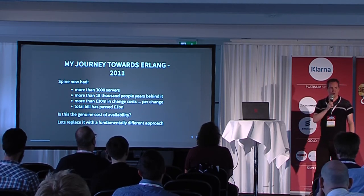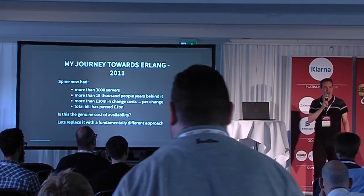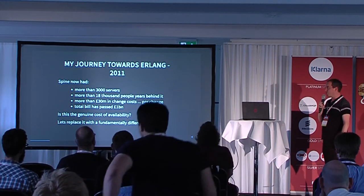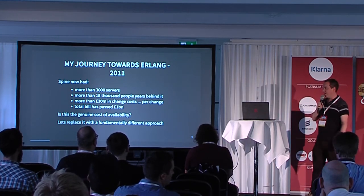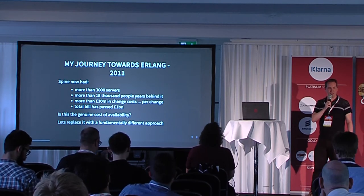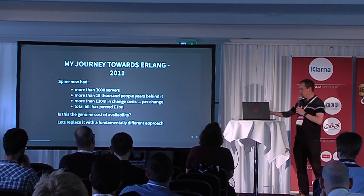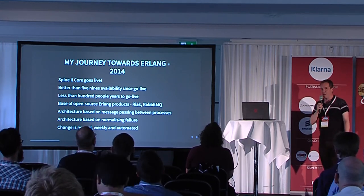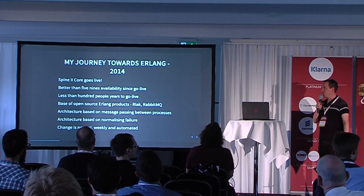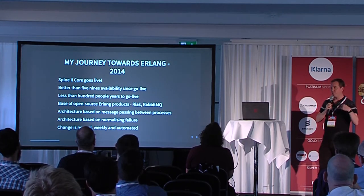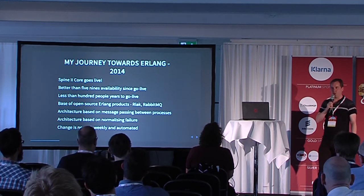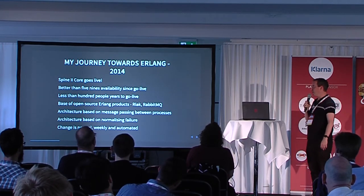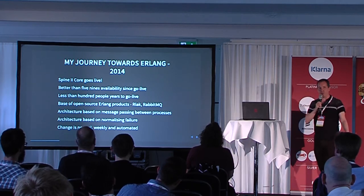The question going around the health service at the time was: is this the cost of availability for doing large-scale systems in this way? Surprisingly, a lot of people thought yes — that all that process and management must be necessary, and without it there'd be chaos. I kind of disagreed with them. I got on with building a replacement and eventually got permission for it. By 2014 we'd built that replacement, gone live, and in the nearly three years since, we've met our five-nines availability target — and we've met it efficiently, releasing once a week rather than once every other year, at a 30-million-pound transition cost. It took less than 100 person-years to get there.